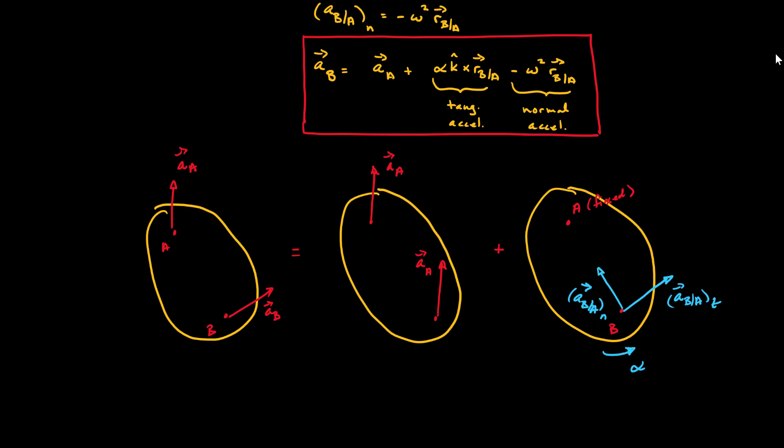In this video, we've mathematically characterized the third mode of 2D planar motion — general planar motion. We started with the assumption that it can be characterized as the summation of a translational component and a rotational component. Using ideas from translation and fixed axis rotation, we've filled out the mathematical equations for the linear velocity and linear acceleration of any point on a rigid body undergoing general planar motion.